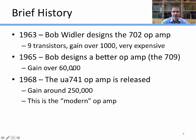Let's look at a brief history of the op-amp. In 1963, Bob Widlar designed the 702 op-amp, and it consisted of just nine transistors, and it had a gain of over 1,000, which means that if you put in an input signal you could increase the voltage of that input signal by up to 1,000, but it was very expensive to build.